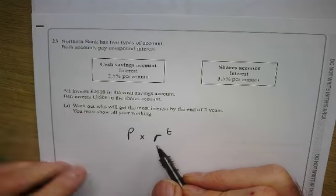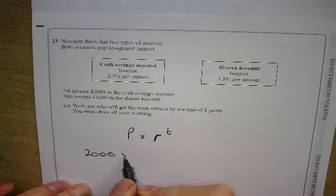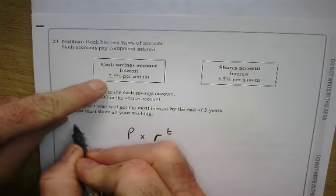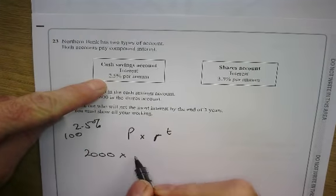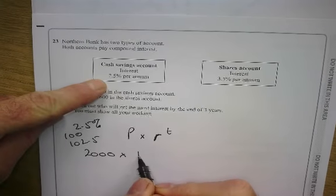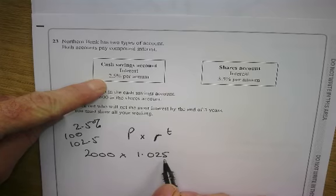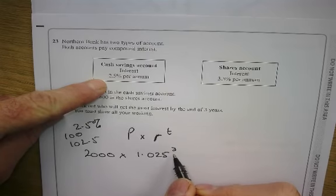So he puts in, Ali puts in into the savings 2000. It gives an interest rate of 2.5%. 2.5% added to 100 is 102.5%. And as your multiplier, 1.025, you might have to research a bit about that, to the power of three.